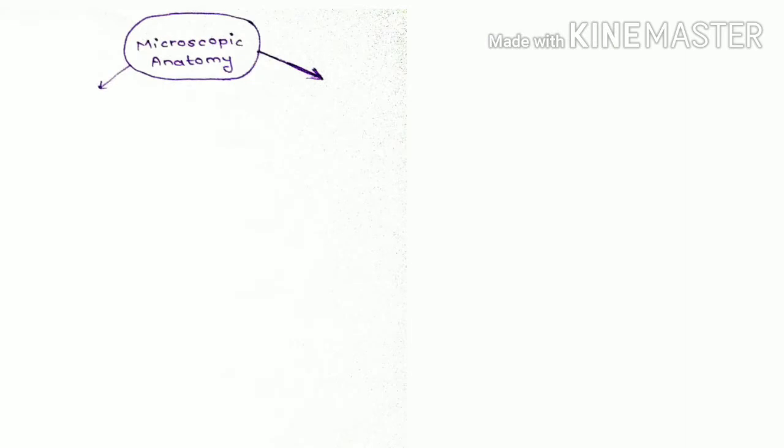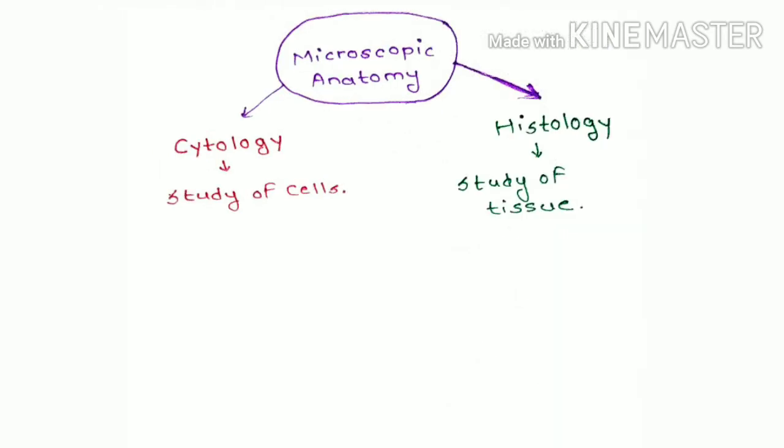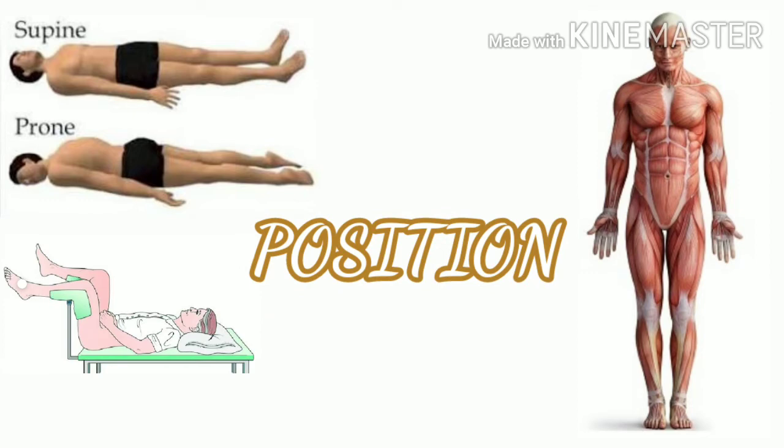Within microscopic anatomy, there are two topics of study which are of great importance. First is cytology, meaning study of cells, and second is histology, meaning study of tissue. Now let's study different types of positions.